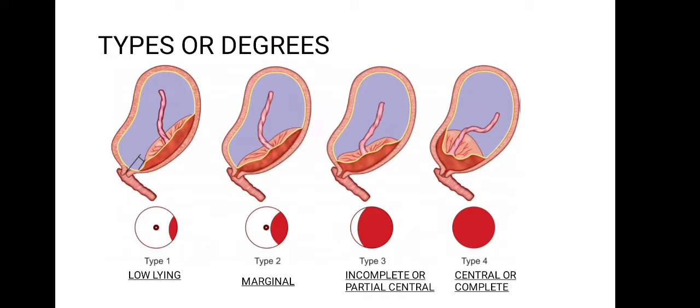What distinguishes each type is the location of the placenta relative to the cervical os. In type 1, though the placenta is in the lower segment, it is away from the cervical os and does not cover it. In type 2, the placenta has reached the margin but still does not cover the os. In type 3, the placenta partially covers the internal os, but when the cervix dilates it no longer covers it. In type 4, the os is completely covered even when the cervix is fully dilated.